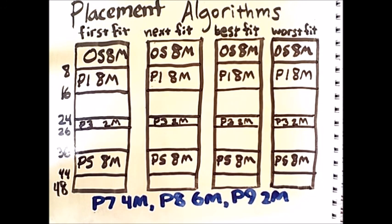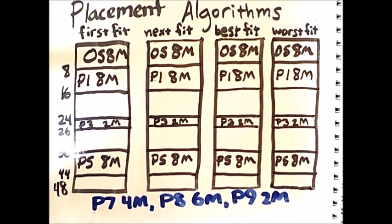First, process 7 will request 4 megabytes, then process 8 will request 6, then process 9 will request 2. Let me first briefly review how each of these placement algorithms works.